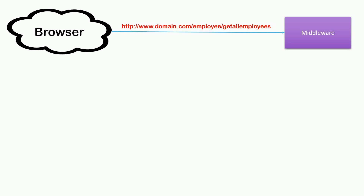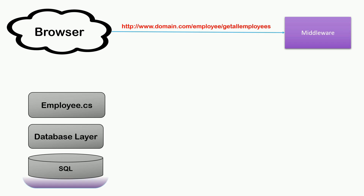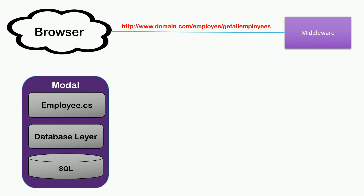At the classes level, we require an Employee.cs class to store employee details like id, name, etc. We also need a DBLayer class to fetch data from our target repository — let's say from SQL. So we have two classes: Employee.cs and DBLayer.cs. In MVC, we term them as a model.